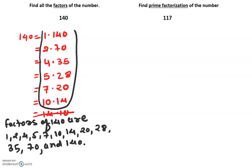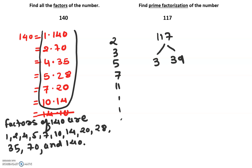Let's do prime factorization. We're going to draw branches starting from 117. The smallest prime is 2, then 3, 5, 7, 11 — that's the order we go. Can 2 go evenly into 117? No, because it doesn't pass the divisibility rule. Let's try 3: 7 plus 1 plus 1 equals 9 — yes, 3 goes evenly into 9, so 3 goes evenly into 117. That gives us 39 times 3.